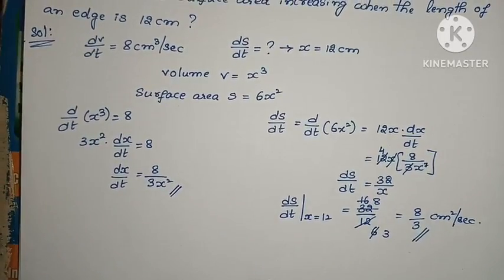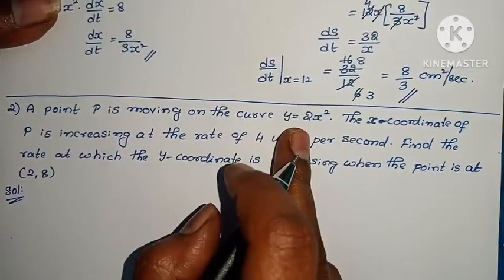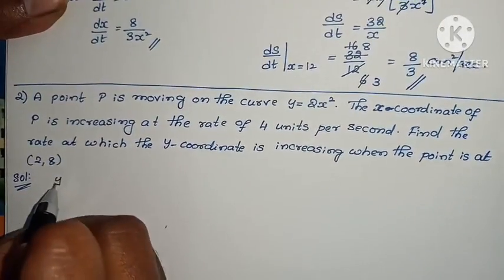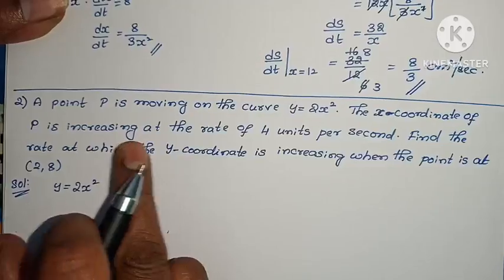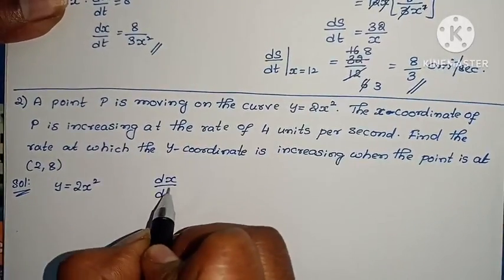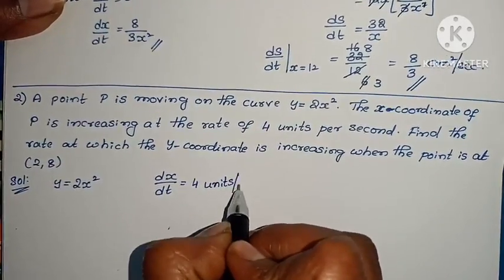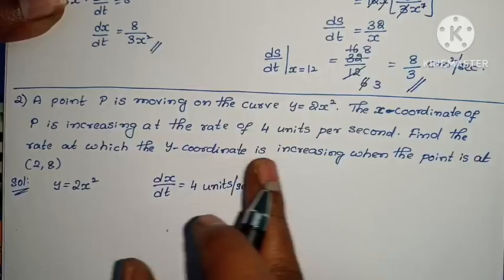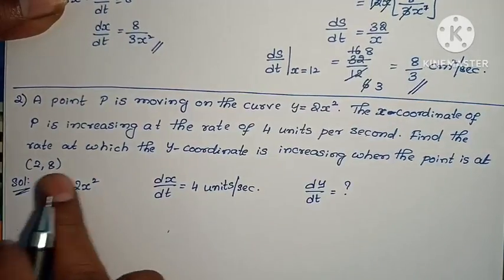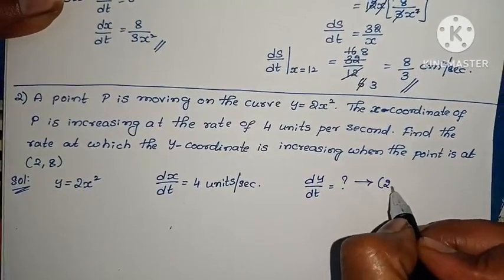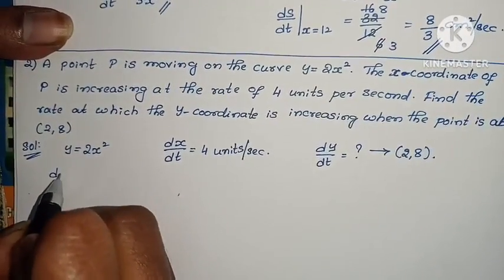Next question: A point P is moving on the curve y equals 2x². The x coordinate of P is increasing at the rate of 4 units per second. Find the rate at which the y coordinate is increasing, dy/dt, when the point is at (2,8).